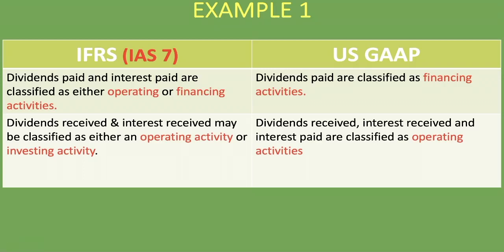To summarize: if you see dividends paid under the operating activity section, you'll know it's most likely using the IFRS standard. If you see it under financing activities, it could be either US GAAP or IFRS, since IFRS also allows that. If dividends received or interest received appear under investing activities, you'll know it's IFRS. I hope you now know how to apply the standard when dealing with dividends in the cash flow statement.